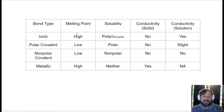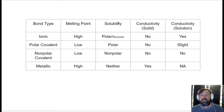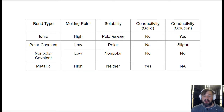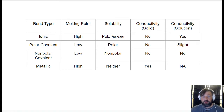Our next test is going to be solubility — does it dissolve in a solvent? There are two different types of solvents we're going to be using: polar and non-polar. For ionic, it does dissolve in polar, and it kind of dissolves in non-polar — some do, some don't. For polar covalent, remember, like dissolves like, so polar solvents will dissolve them. For non-polar, a non-polar solvent dissolves them. Metallics don't dissolve — it doesn't matter what you put them in, they won't dissolve.